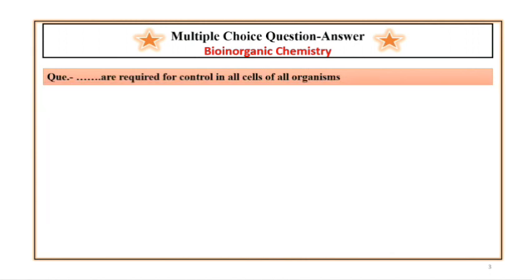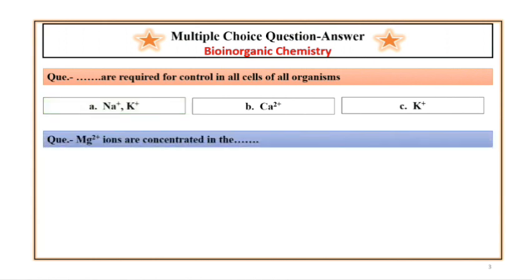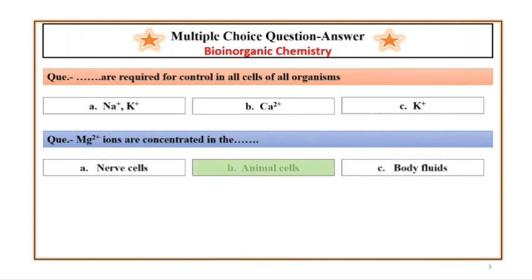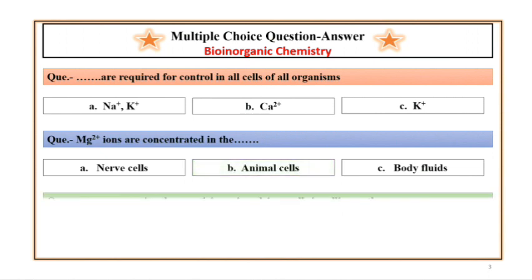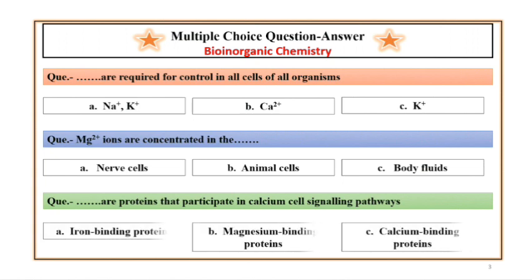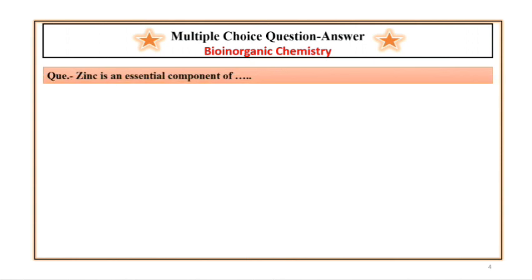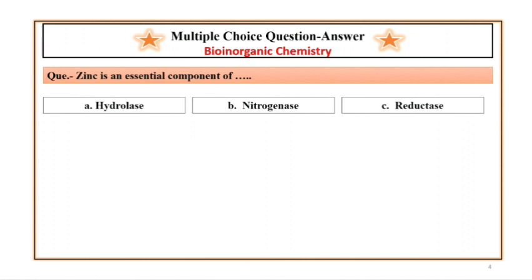Dash-dash are required for control in all cells of all organisms. Answer: Na+ and K+. Mg2+ ions are concentrated in the animal cells. Dash-dash are proteins that participate in calcium cell signaling pathways. Answer: Calcium binding proteins. Zinc is an essential component of — Answer: Hydrolase.